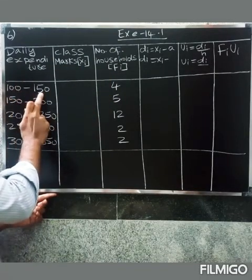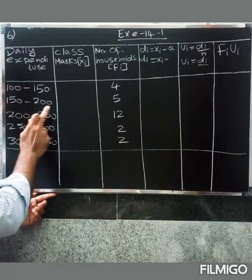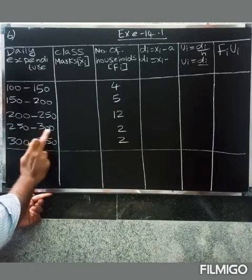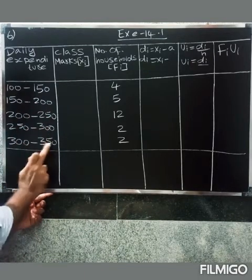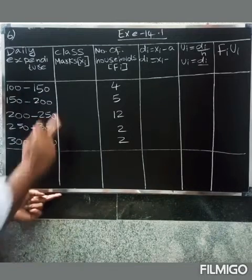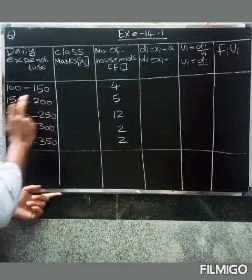The class intervals are: 100 to 150, 150 to 200, 200 to 250, 250 to 300, and 300 to 350. First, we will check that the data is continuous.